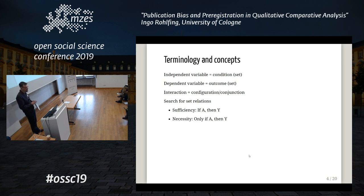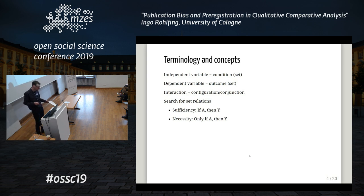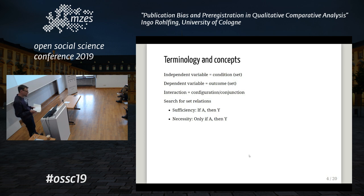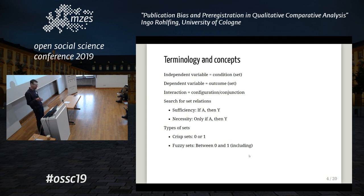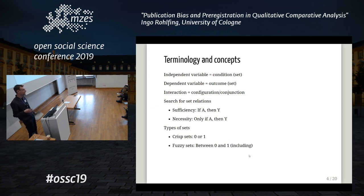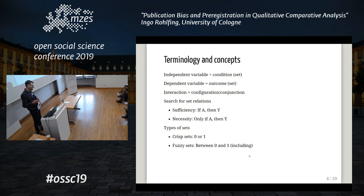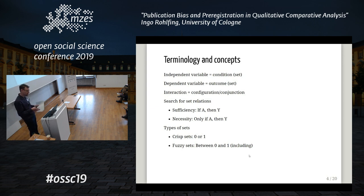The other relation is necessity: only if the condition is there, then you have the outcome. The arguments I make apply to both, but I focus on sufficiency. We have different types of sets. The simplest, original one is a crisp set — it's binary, you can think of it as a dummy variable. Then we have fuzzy sets where you have values between 0 and 1. You might wonder why we need sets, but I'll step aside those debates and focus on publication bias.